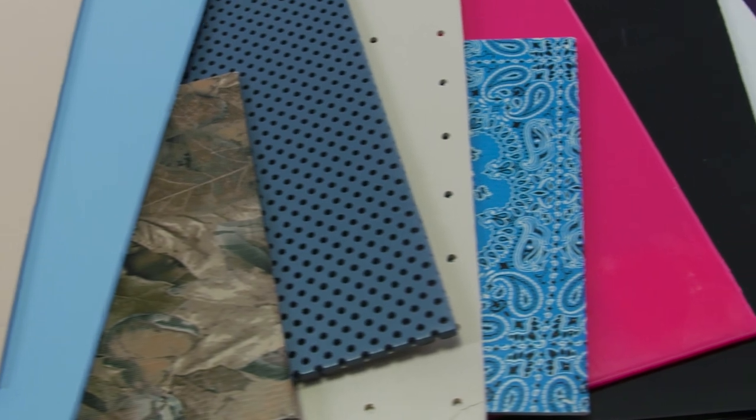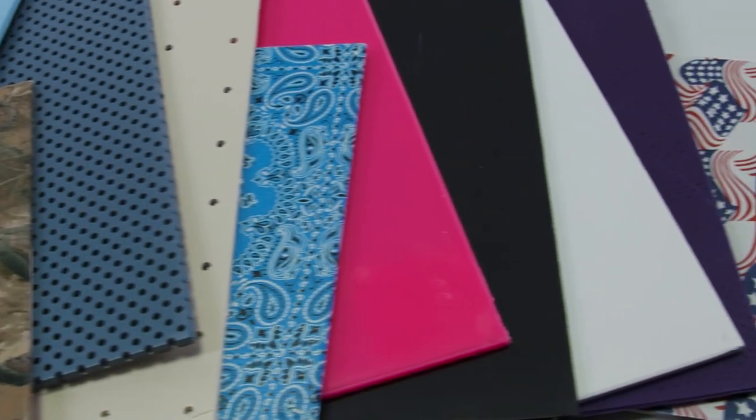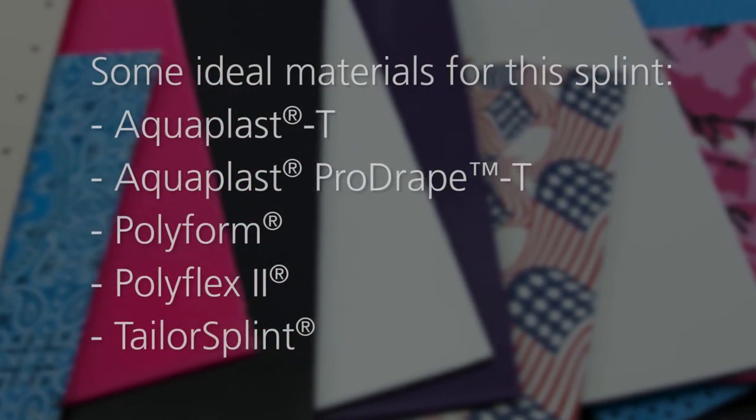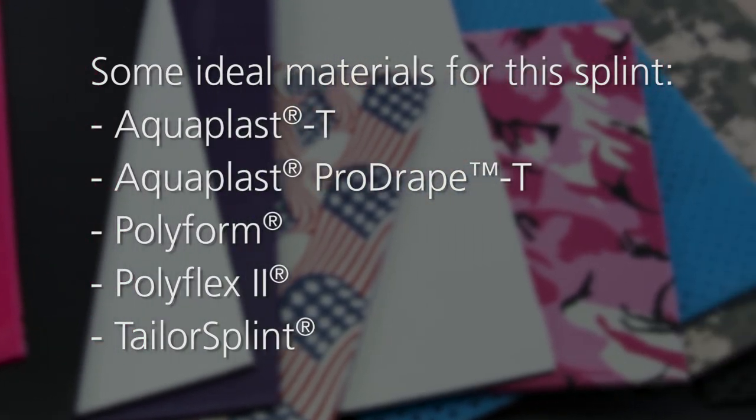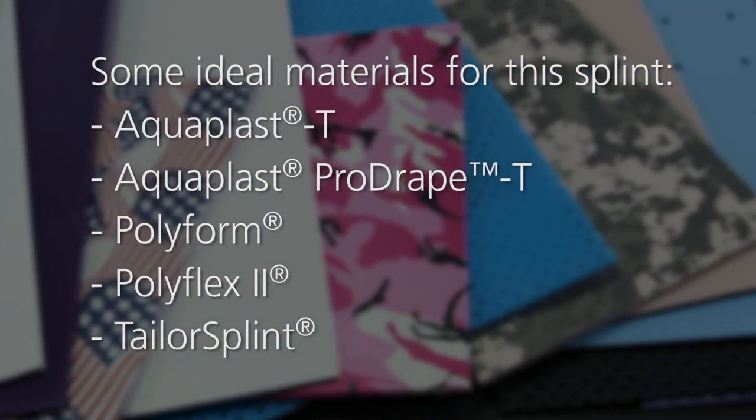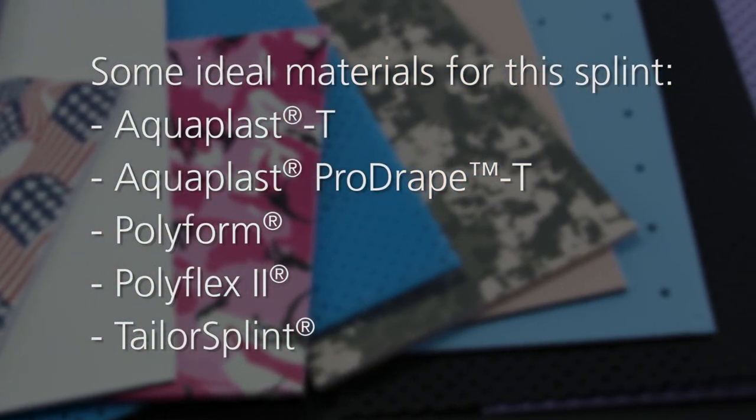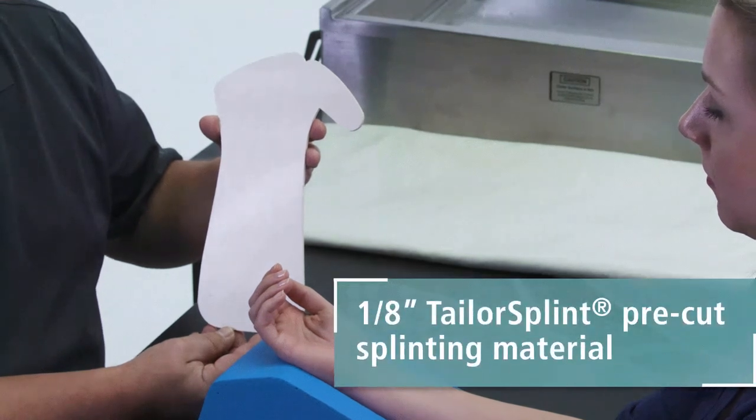Rolyan has a material for every splint, every therapist, and every experience level. A material with a high degree of conformability and low resistance to stretch are best for this splint. Today we will be using 1⅛ inch Taylor splint pre-cut splinting material.